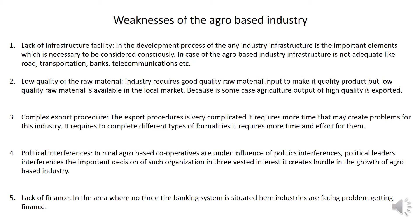Now, the weaknesses of agro-based industries. The first weakness is lack of infrastructure facilities. Infrastructure is an important element in the development of any industry. In the case of agro-based industries, infrastructure is not adequate — including roads, transportation, banks, and communication. The second weakness is low quality of raw material. The industry requires good quality raw material input to make quality products, but low quality raw material is available in local markets.